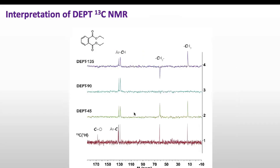Now let's take another example with a different molecule. This molecule has a plane of symmetry, so half of it is equivalent to the other half. Therefore, this molecule will show only six signals in carbon NMR.